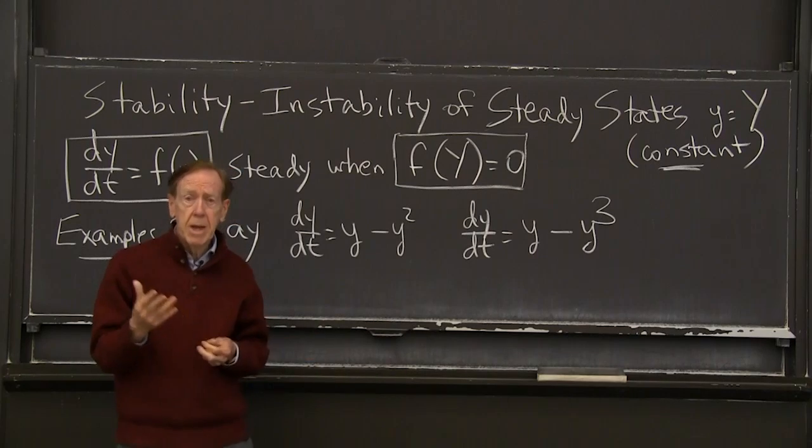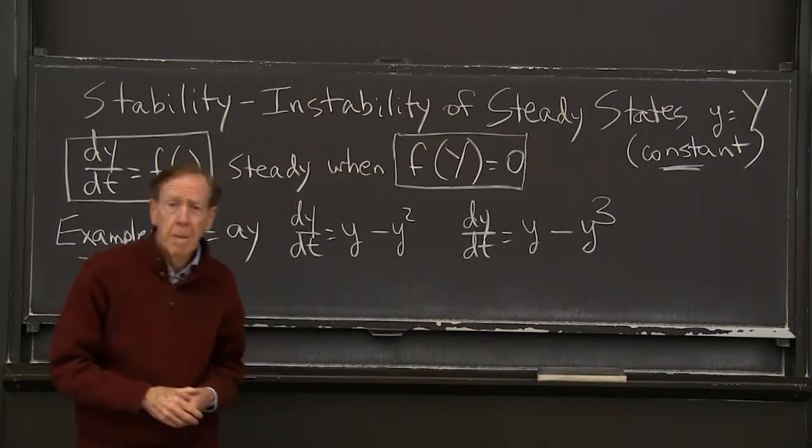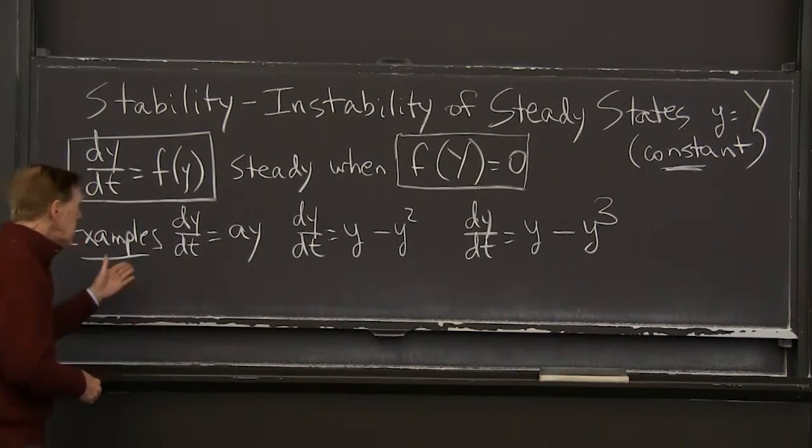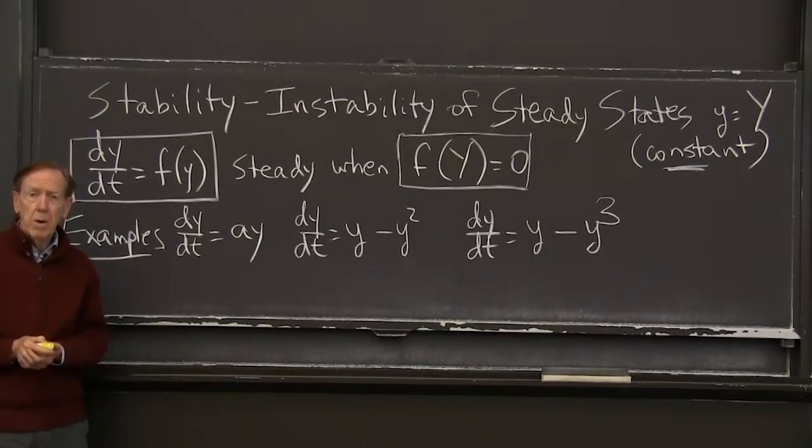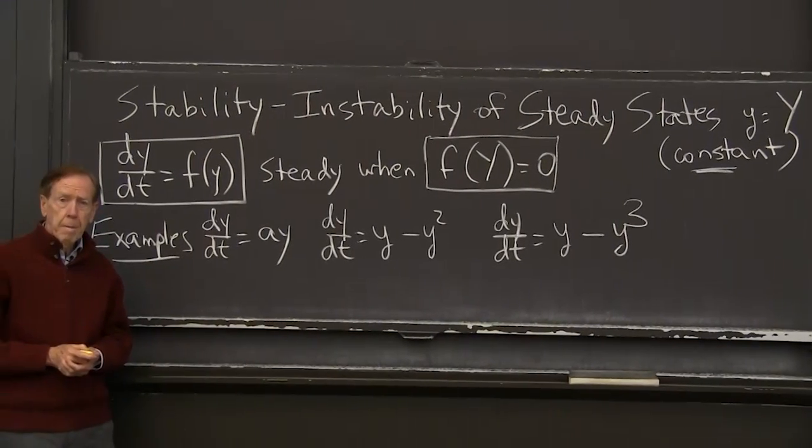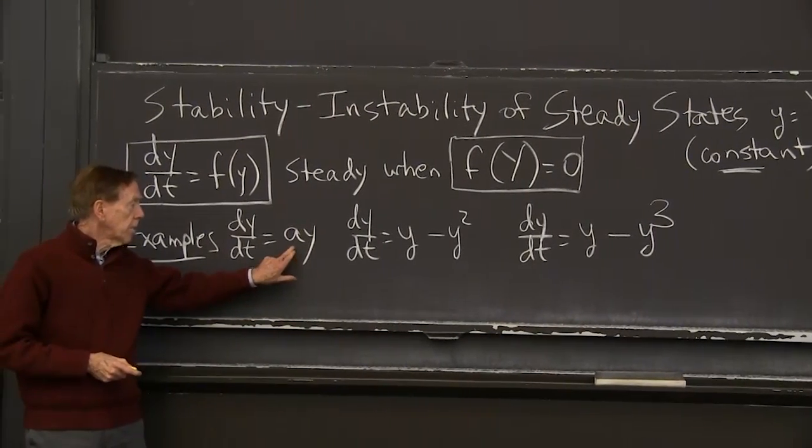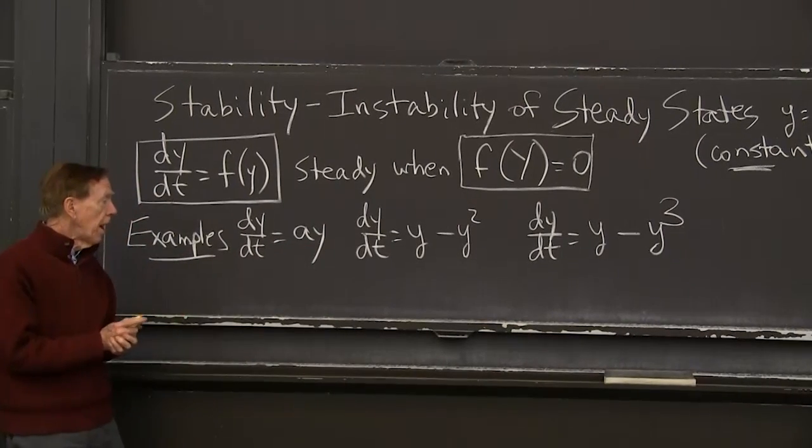Or does the solution, when we start near y, go far away from Y, from capital Y, leave the steady state? In that case, I would call the steady state unstable. So stable or unstable, and it's very important to know which it is. And let me just do some examples, and you'll see the whole point. So here is first starting with a linear equation.